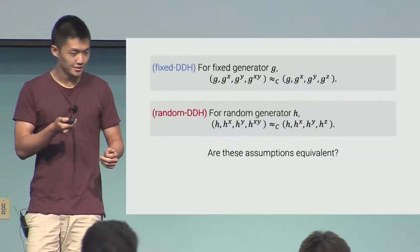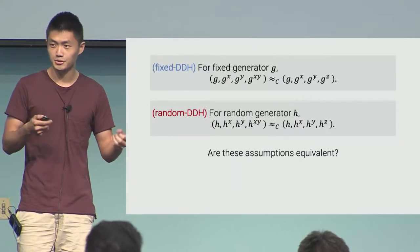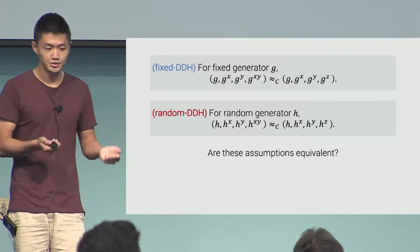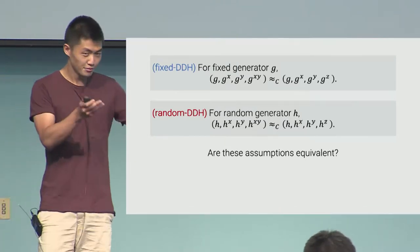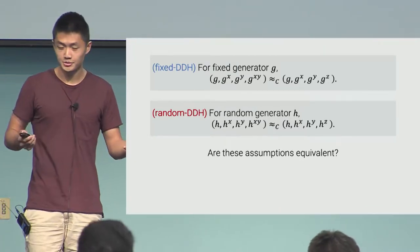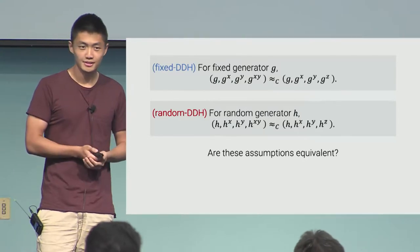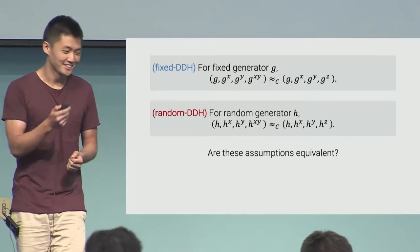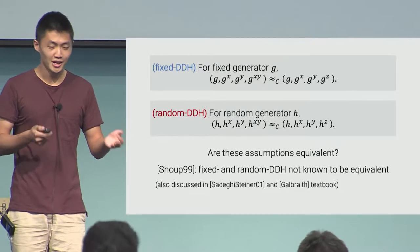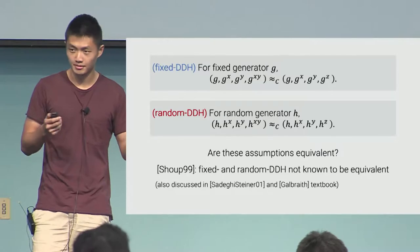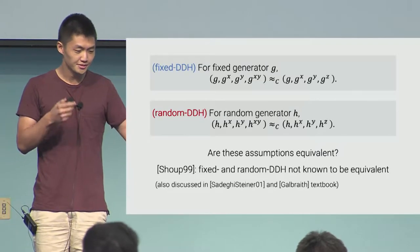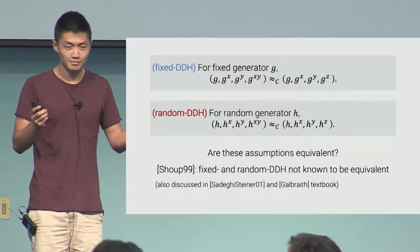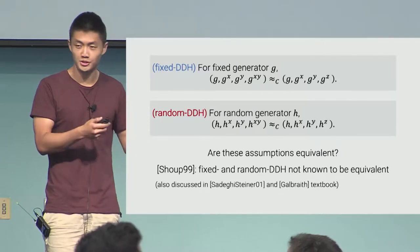I'm going to call the first thing fixed DDH — DDH with a fixed generator — and the second thing random DDH, which is DDH with a random generator. A natural question is: both of these assumptions are called the DDH assumption, so are they equivalent? You can probably guess from the fact that the talk is not over that they're not equivalent. This was observed by Shoup in '99. Shoup pointed out that the fixed and random DDH assumptions are not known to be equivalent — there's no trivial equivalence between the two assumptions.